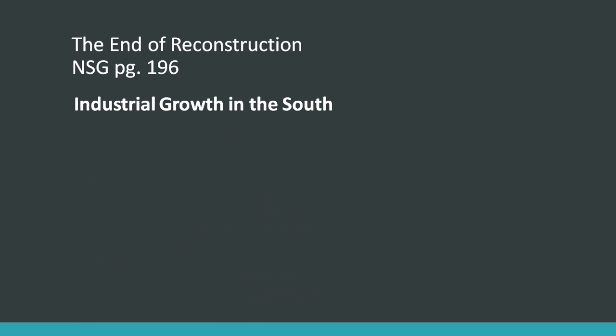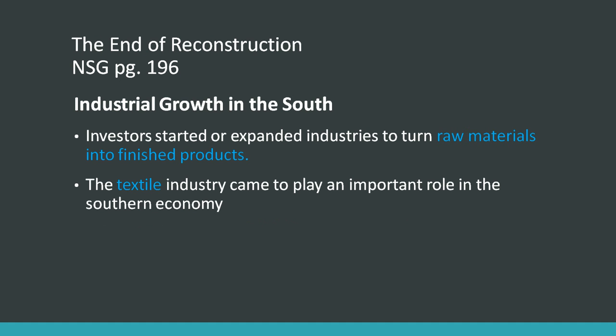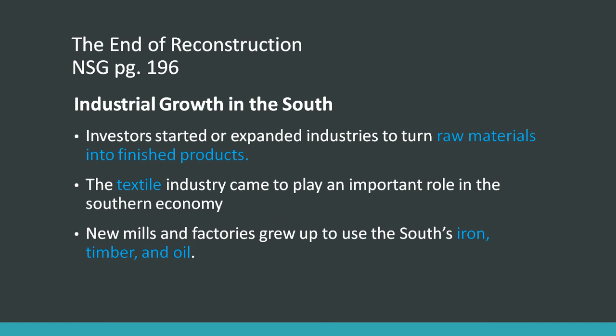One of the impacts of Reconstruction was that investors started to expand industries — turning raw materials into finished products — so you had an expansion of industry in the South. The textile industry came to play an important role, with new mills and factories growing up in the South to use its iron, timber, and oil raw materials.